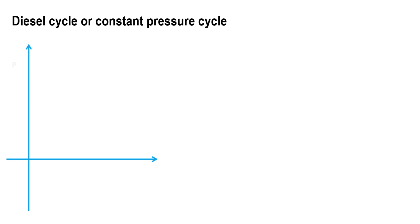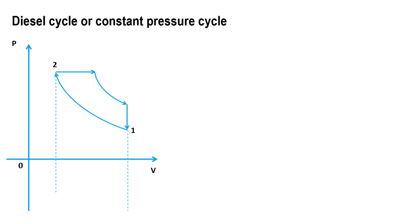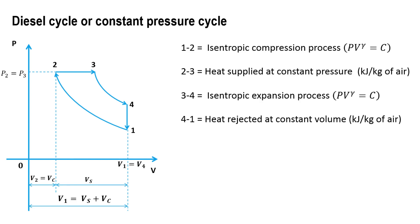We have already seen the video on the derivation of the air standard efficiency of the diesel cycle — the link will be given in the description. So let us start with the analysis part. Process 1 to 2 is the isentropic compression process. Then 2 to 3 is heat supplied at constant pressure. Then 3 to 4 is the isentropic expansion process. And 4 to 1 is heat rejected at constant volume.